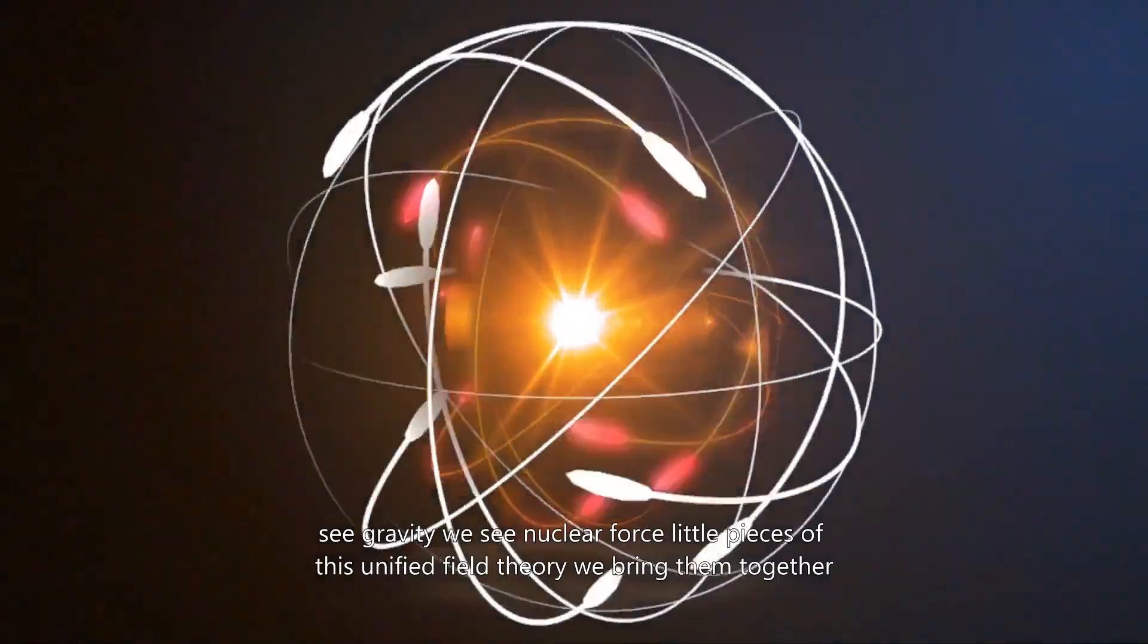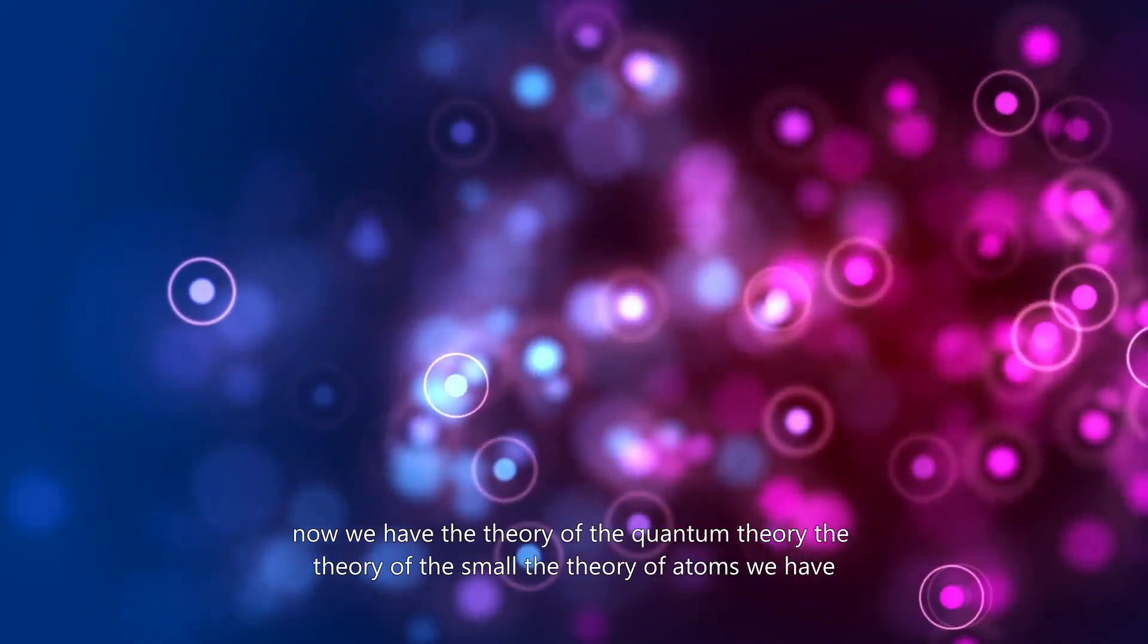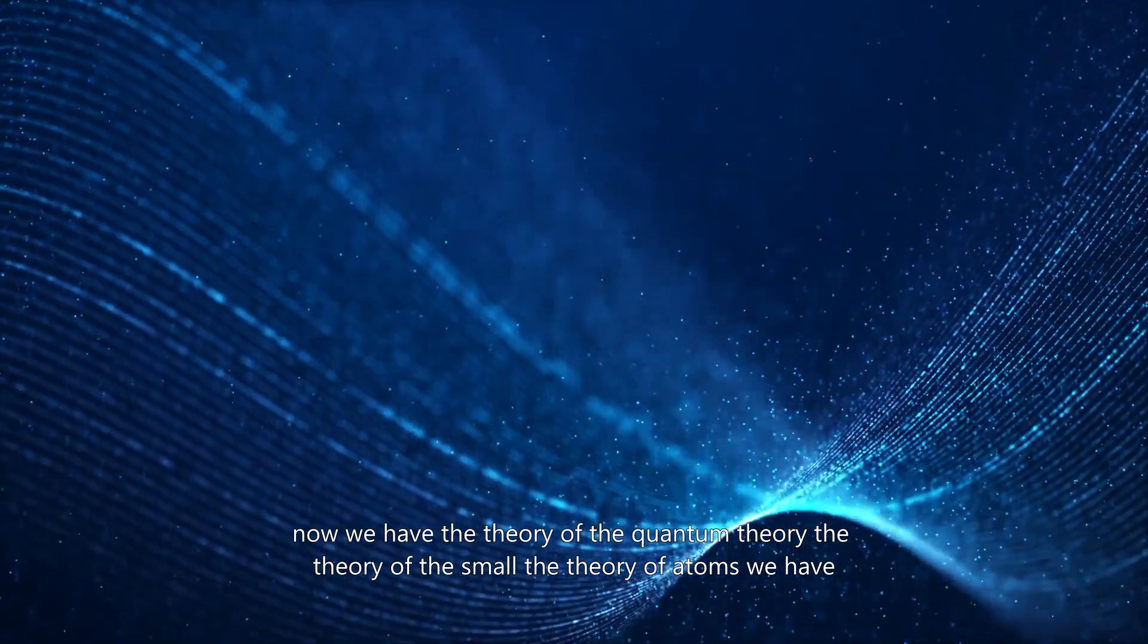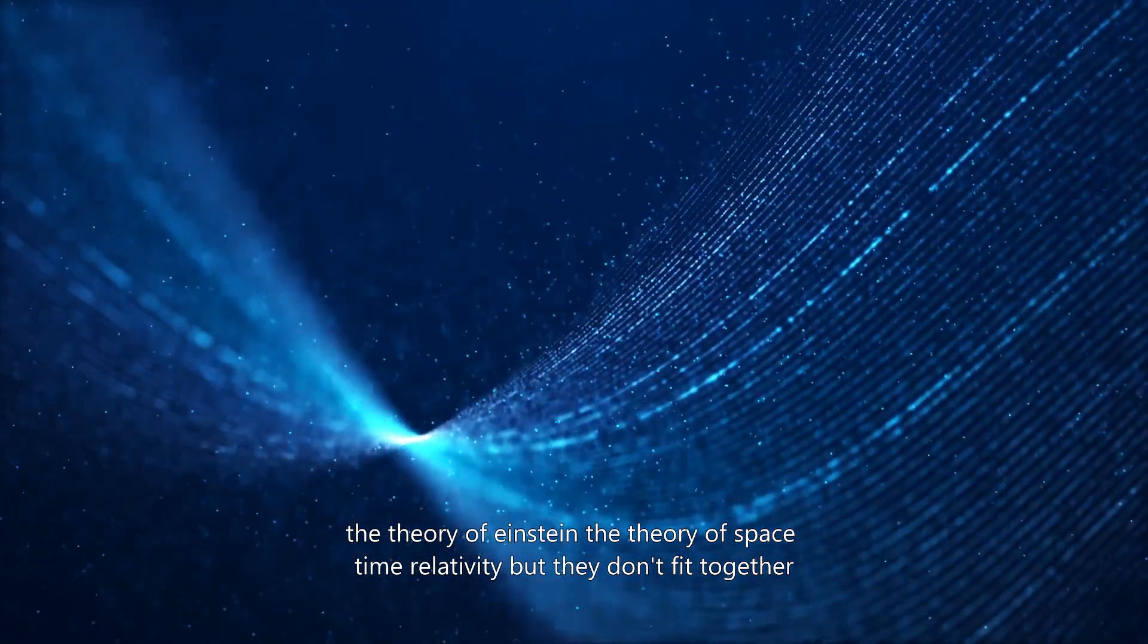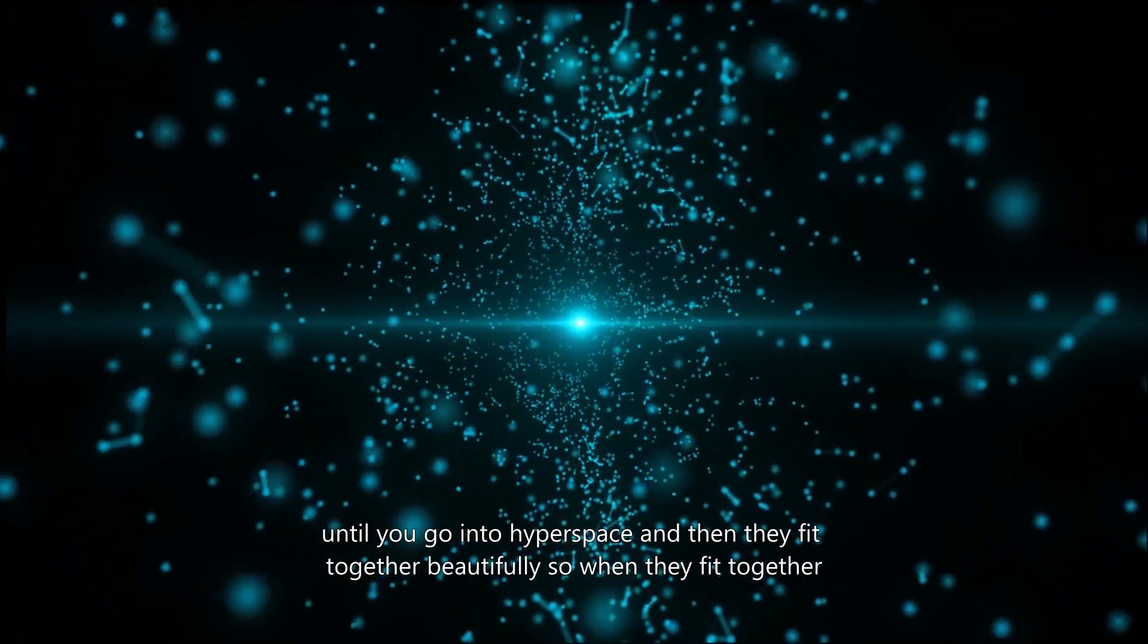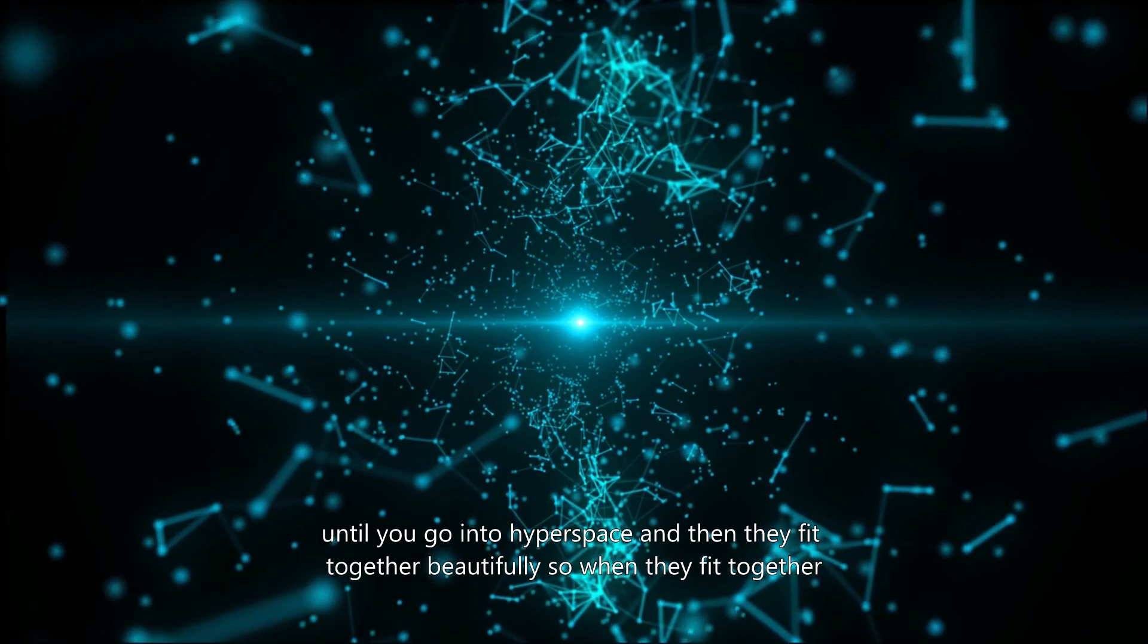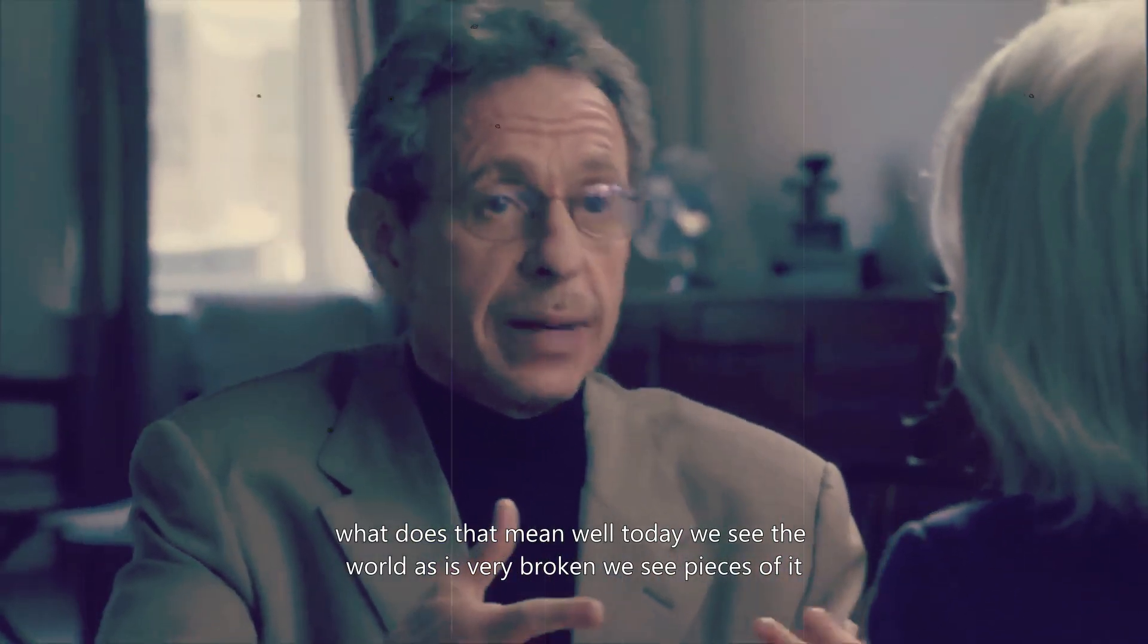Little pieces of this unified field theory. We bring them together. Now we have the theory of the quantum theory, the theory of the small, the theory of atoms. We have the theory of Einstein, the theory of space, time, relativity. But they don't fit together until you go into hyperspace. And then they fit together beautifully. So when they fit together, what does that mean?